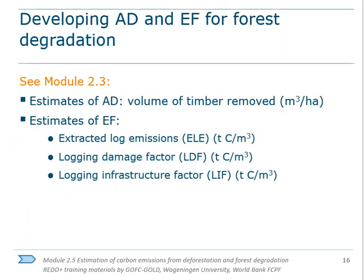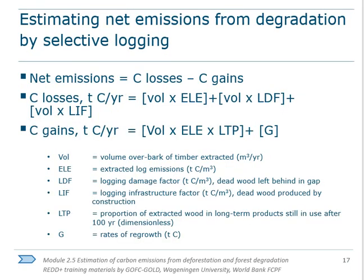For forest degradation, a number of approaches have been developed to quantify emissions for specific degradation activity types. Module 2.3 focuses on estimating emissions from forest degradation from selective timber harvesting, which involves combining data on the volume of timber removed — which serves as activity data — with an emission factor that is an estimate of the carbon impact selective logging has on a forest. Net emissions from selective logging, representing the emissions as well as the carbon regained through growth following selective logging and wood stored in long-term wood products, can be calculated by subtracting the losses from gains. Please see Module 2.3 for further guidance.